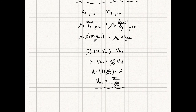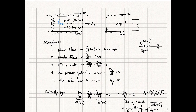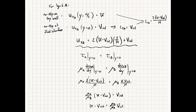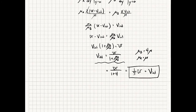Substituting the given values — μB equals 4μ and μA equals μ — so μB/μA equals 4. Therefore V_interface equals U / (1 + 4) equals U/5. Our interface velocity is one-fifth the top plate velocity.